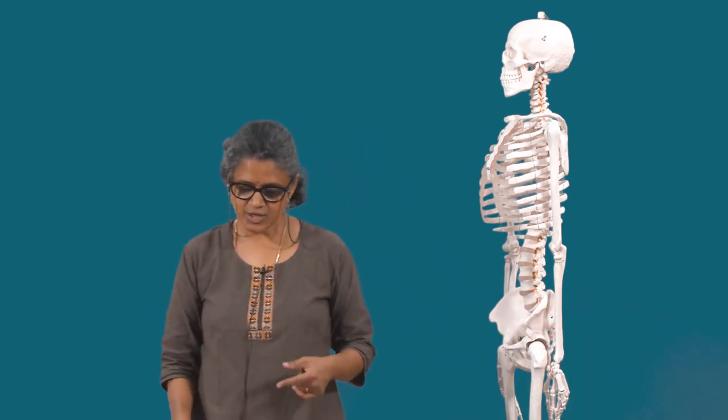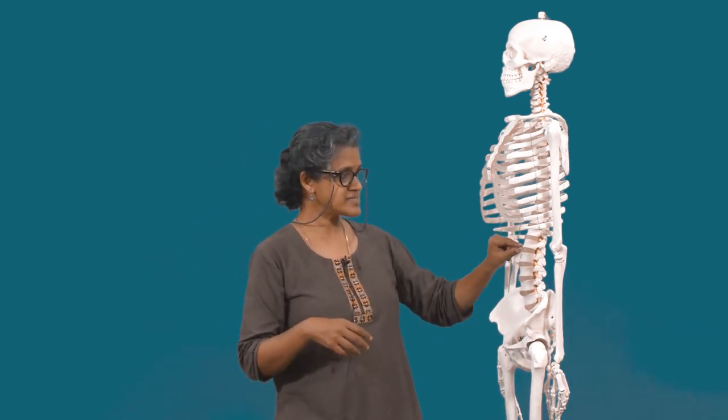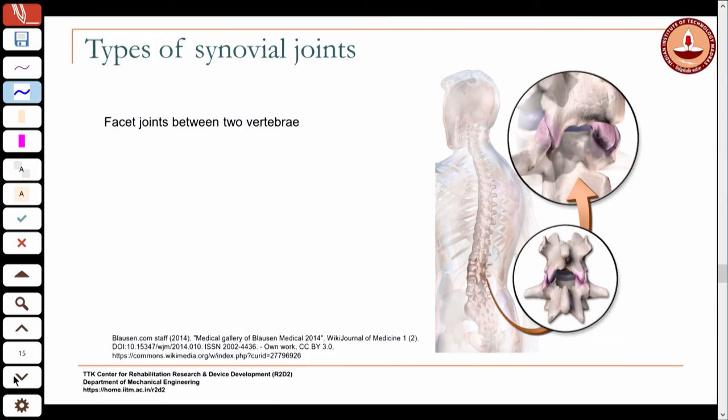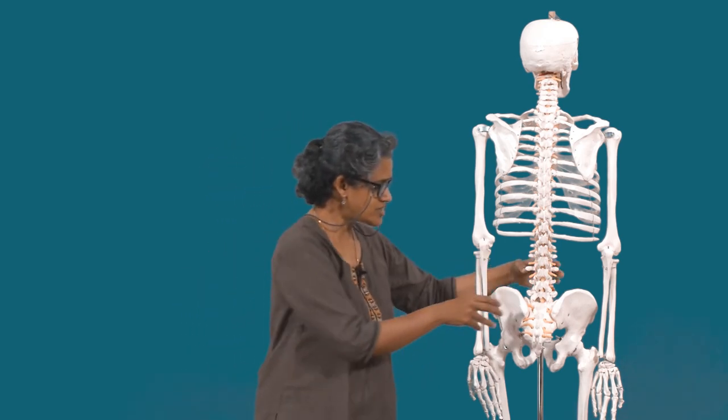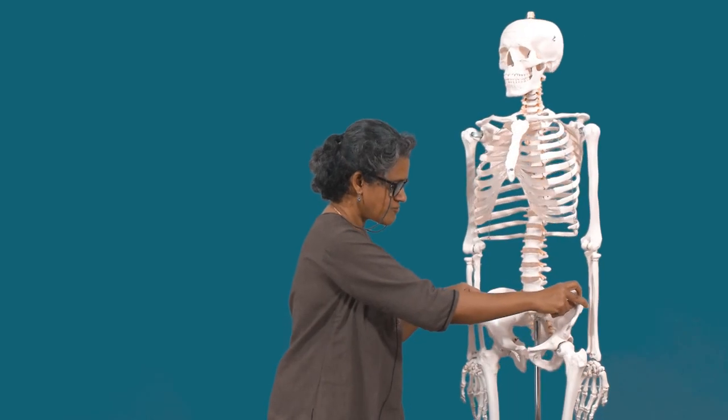Other planar joints are between vertebrae — in the posterior part, vertebrae interlock and overlap, and the sliding motion between these facets is another example of a gliding joint. These are among the few places where translation happens in the body. The major movements are not translational — all segments rotate about joints to cause the major movements of the body.